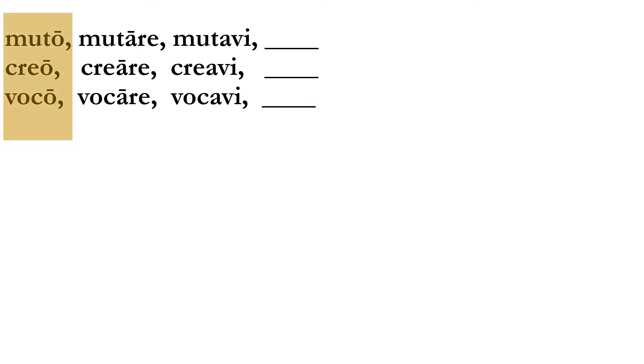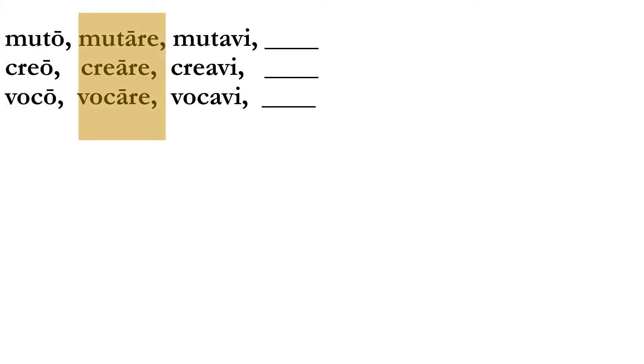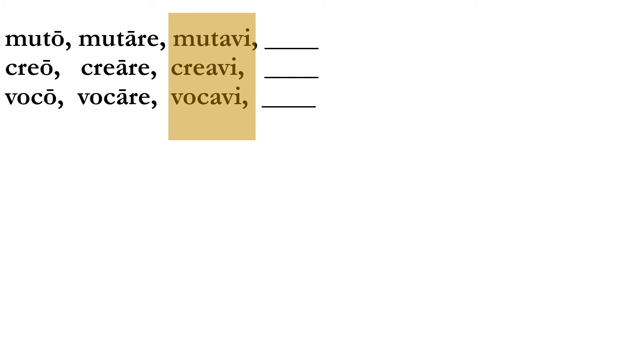So: 'muto, mutare, mutavi' — 'muto' is I change, to change, I have changed. And we have 'creo' and 'voco' — words we've seen before. The first principal part has the O with a macron, the second principal part of the verbs we've done so far (except for 'sum') ends in '-are,' and the third principal part has the V. I haven't put all of the macrons in for now — I'm just focusing on the consonants more.